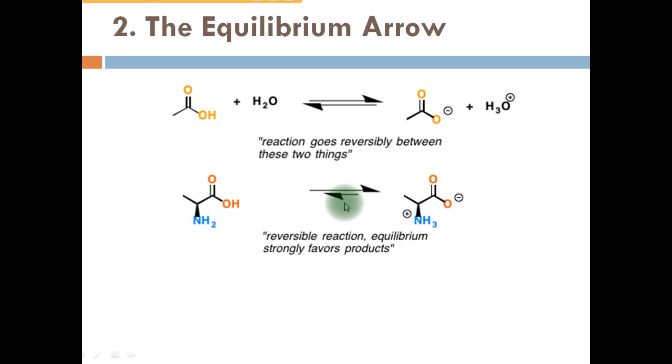In the next reaction, the equilibrium strongly favors the product when this half arrow is longer towards the product. When this arrow is longer towards reactant, equilibrium strongly favors reactants.